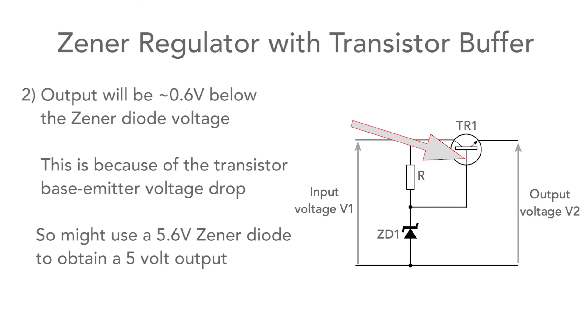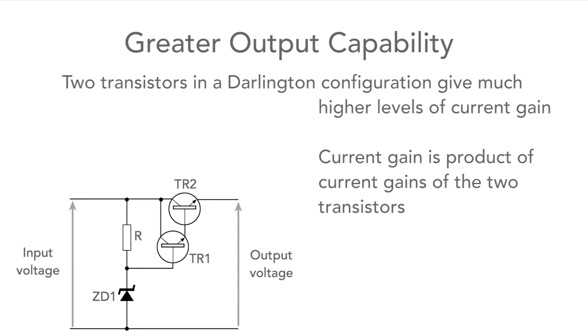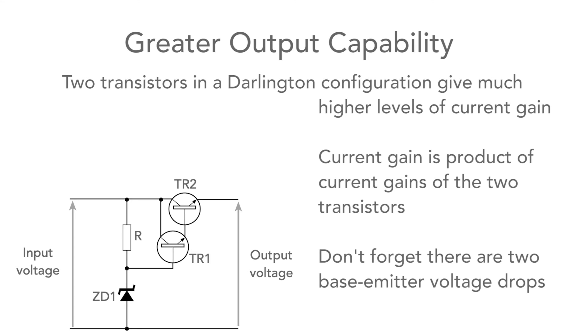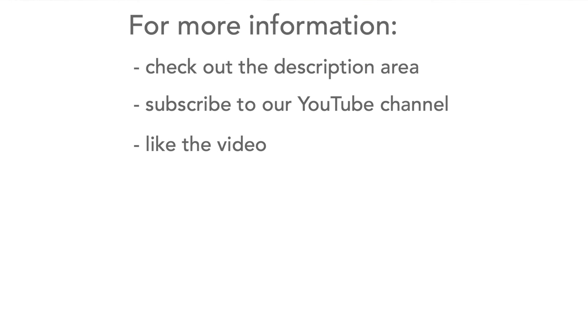So for a five volt line you might choose a 5.6 volt Zener, which will give an output of about five volts. If you need greater output capability you could use two transistors to get a much higher level of current gain — the gain will be the product of the individual current gains of the two transistors — but don't forget that this time there will be two base-emitter voltage drops. That's our quick rundown of the simple shunt regulator circuit. Head over to the description for more information and links, and please like the video and subscribe to our channel.